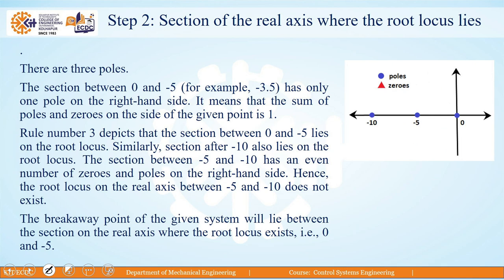In step number 2, we plot the poles on the S-plane. Poles are shown by a cross mark and zeros by a small circle. On the S-plane, the first pole is at s=0, the second pole is at s=−5, and the third pole is at s=−10. There are no zeros in the system, so only these three poles are shown.